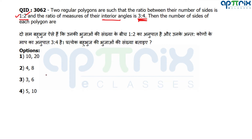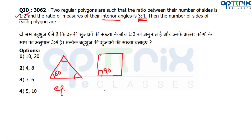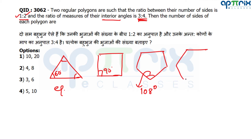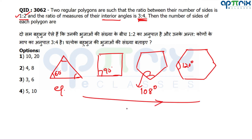Let me talk about regular polygon interior angles. In an equilateral triangle, all angles are 60 degrees. In a square, all angles are 90 degrees. In a regular pentagon, every angle is 108 degrees. In a regular hexagon, every angle is 120 degrees. These are values you need to know.